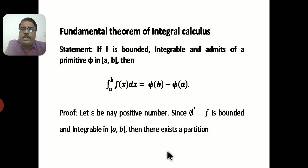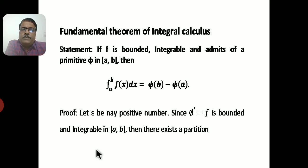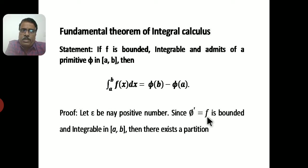Next, we have the Fundamental Theorem of Integral Calculus. It states that if f is bounded and integrable, and admits a primitive φ on [A, B], then the integral from A to B of f(x) dx equals φ(B) − φ(A). Since φ′ = f, and f is bounded and integrable, φ′ is also bounded and integrable on [A, B].